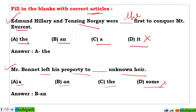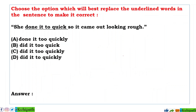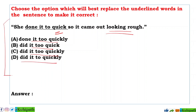Next: Choose the correct option which will best replace the underlined word. 'She done it too quick, so it came out looking rough.' Options: A: done it too quickly, B: did it too quick, C: did it too quickly, D: did it too quick. The answer is C — 'did it too quickly'. This is a grammar question — viewers, please comment your answer below.